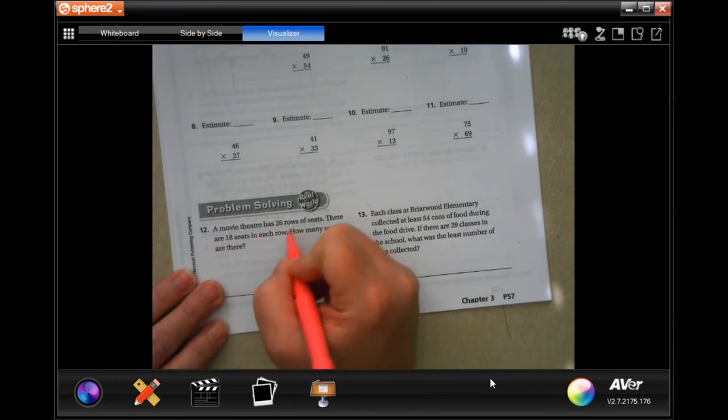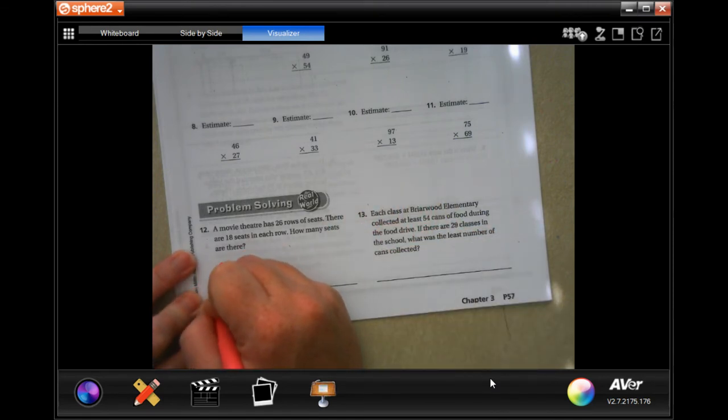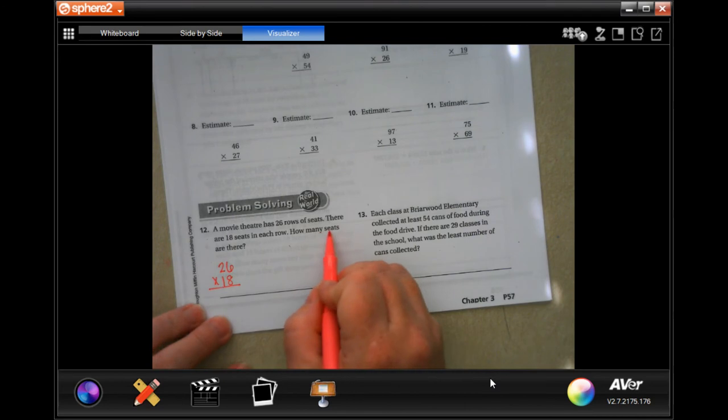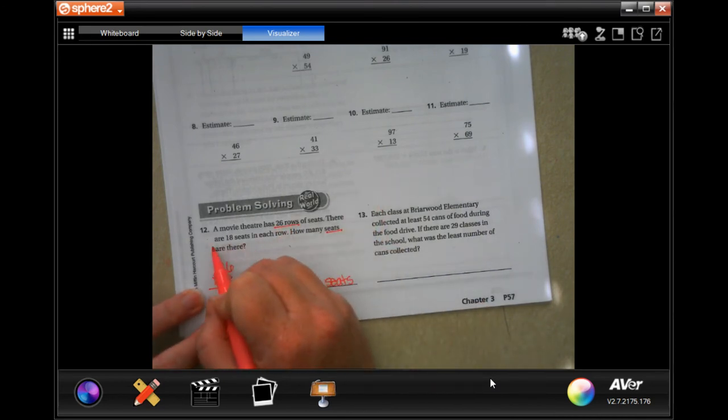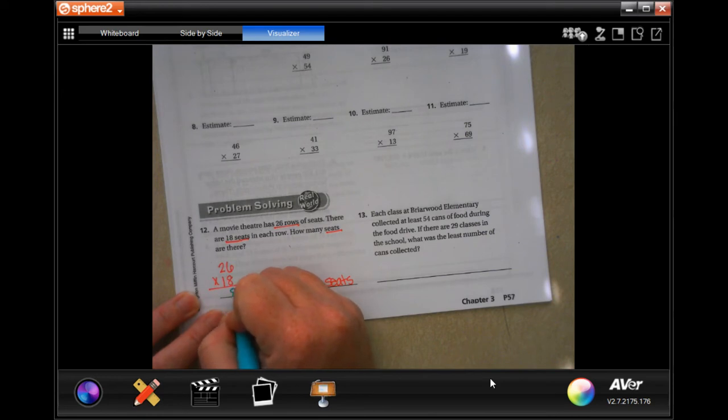A movie theater has 26 rows of seats. There are 18 seats in each row. How many seats are there? Well, that means that we have 26 times 18. Let's do it. And whatever it is, it's going to wind up being in seats. So 26 rows, 18 in each. So now, eight times six is 48. Carry the four. Eight times two is 16, plus four is 20. We're going to go back through and we're going to go tic-tac-toe. One times 26 is going to be 26. So now I'm going to add them up.